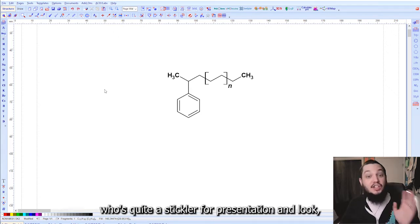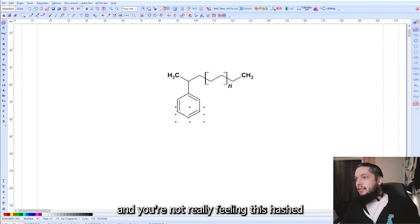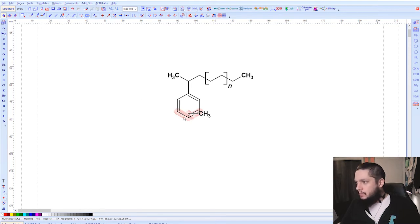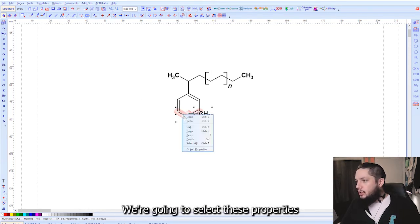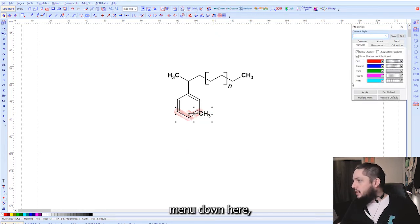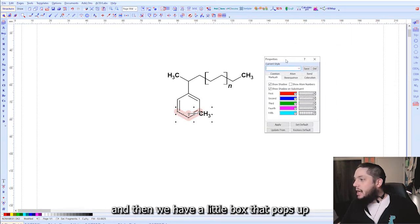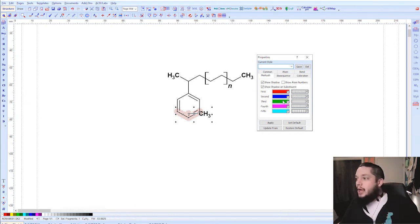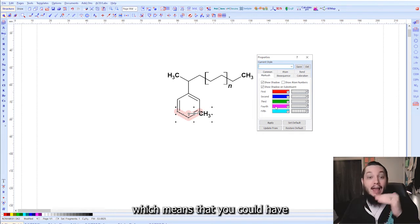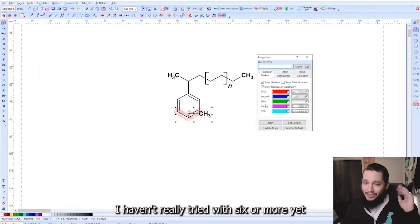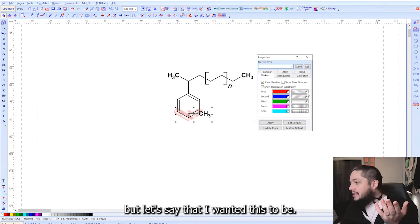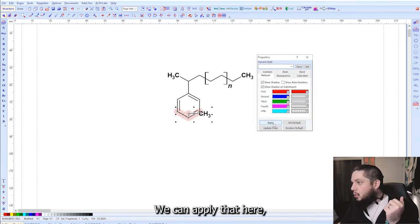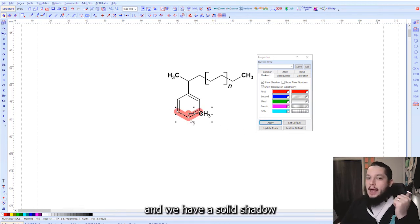Now, let's say you're somebody like me who's quite the stickler for presentation and look, and you're not really feeling this hashed appearance. So we're going to go back and put on our Markush bond with the shadow to it. We're going to select this properties menu down here. And then we have a little box that pops up that allows us to change the way in which our Markush bonds are displayed. Now, there are numbers of them, which means that you can have more than one of these on at once. I haven't actually tried with six or more. You know, do that on your own if you'd like. But let's say that I wanted this to be just a solid red here. We can apply that here, and we have a solid shadow, as opposed to the hashed shadow.